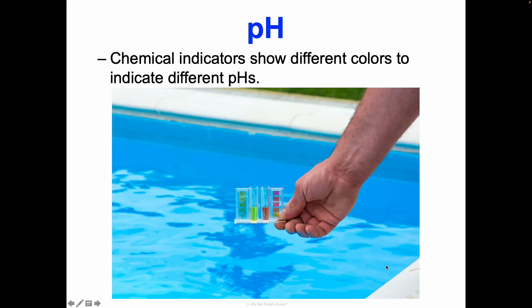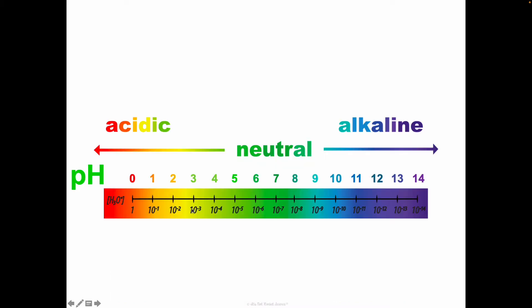You may have done something like this before. If you're a lifeguard in the summers, you may have used chemical indicators. They show different colors to indicate different pHs, and you can use those to test the pool water and make sure it's the right pH for swimming.